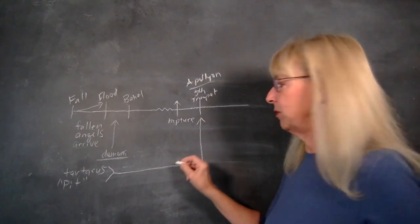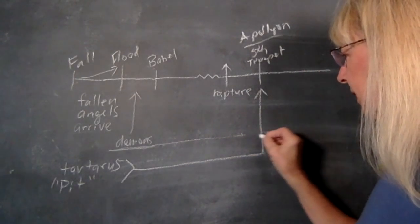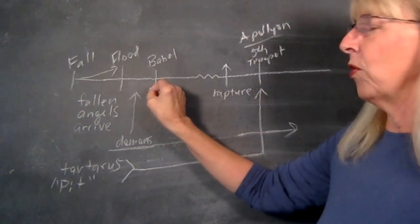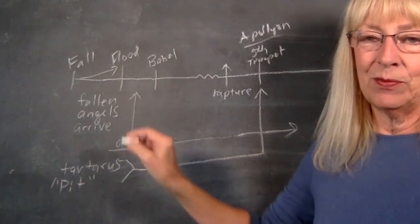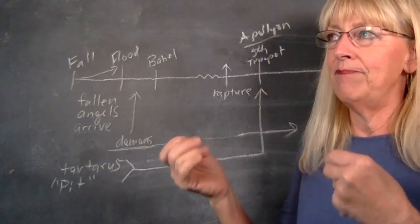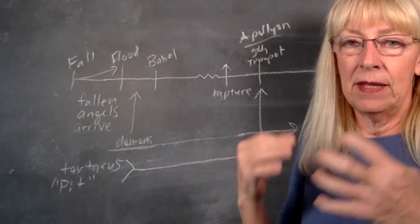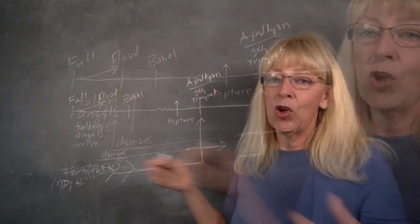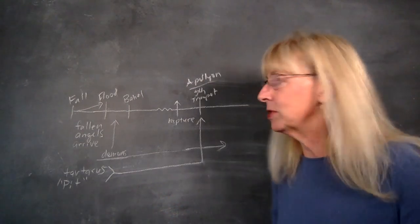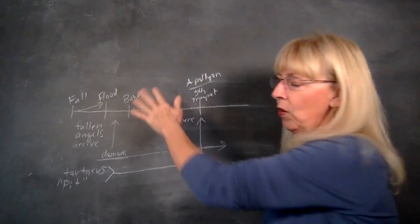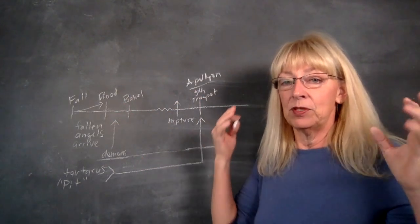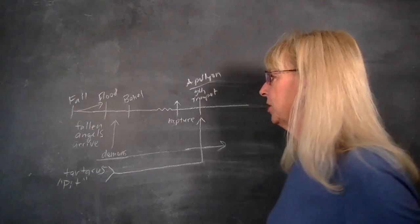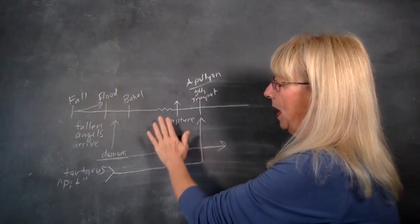God confused the languages, which helped to basically mitigate the evil that would again go beyond repair. People spread out over the whole earth, and that's how Babel came to be on the four corners of the earth.